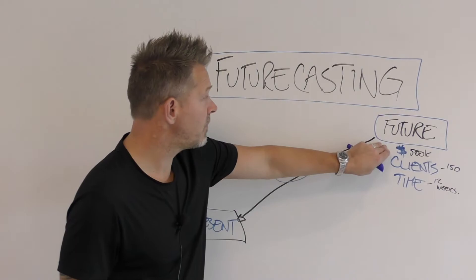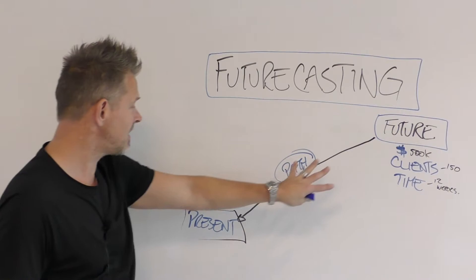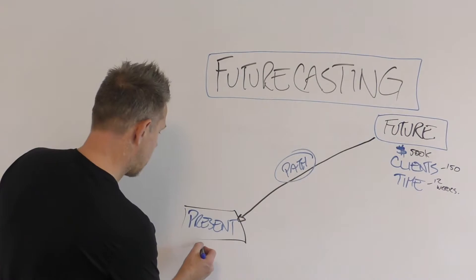Then what we do is you go from the future—that's your future cast—then we go back to the present and say, okay, currently what am I at? So what do we do? We compare: how much money am I making, what kind of clients am I working with and the number of clients, and how much free time do I have.